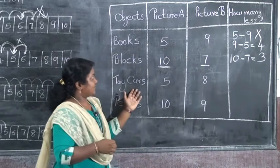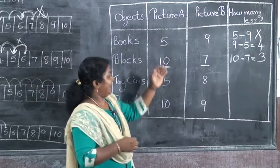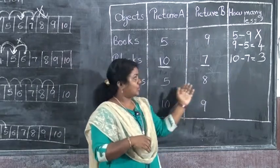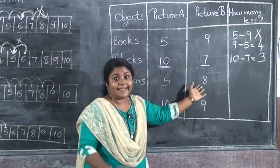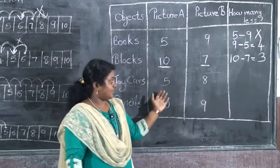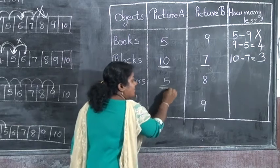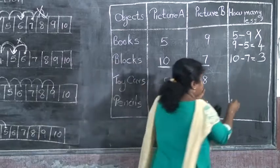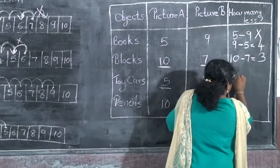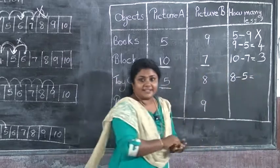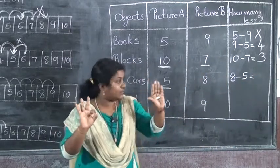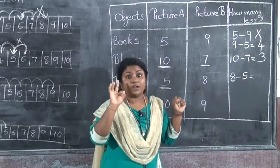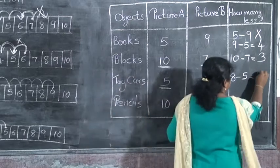The next one is toy cars. In Picture A you can see 5 toy cars and in Picture B you can see 8 toy cars. Picture B has the bigger number, so we write 8 minus 5. Take 8 fingers and fold 5 fingers. What is left? The balance is 3. So the answer is 3.